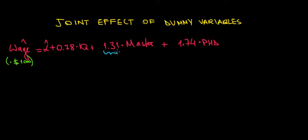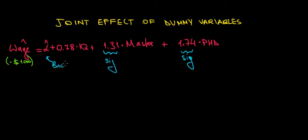Let's work with the coefficients of Master and PhD, since we're working with our categories for education level. Assuming that they are significant, this tells us how education is going to affect wages on average compared to the reference category — the bachelor's degree that is included in the constant. These are our partial effects.